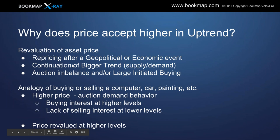Why does price accept higher in an uptrend? What's the re-evaluation of the asset? Usually the repricing occurs after a geopolitical or economic event — some sort of news or economic data — we see continuation of that bigger trend. There's already a bigger picture supply and demand imbalance. Or it might simply be that auction imbalance and large initiated buying together, which alone will allow price to trade and accept above or below a defined range.